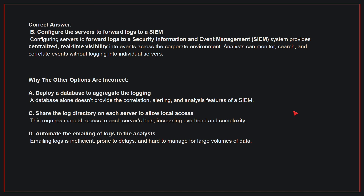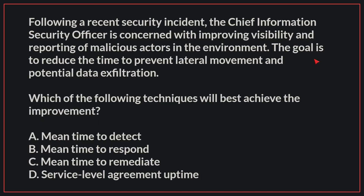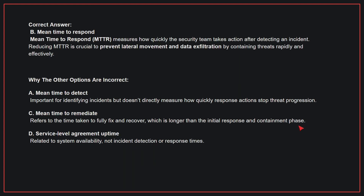Therefore, the correct answer is B. Following a recent security incident, the chief information security officer is concerned with improving visibility and reporting of malicious actors in the environment. The goal is to reduce the time to prevent lateral movement and potential data exfiltration. Which of the following techniques will best achieve the improvement? The correct answer is B. Mean time to respond. Mean time to respond measures how quickly the security team takes action after detecting an incident.